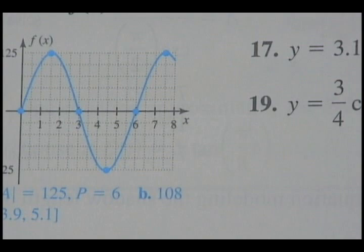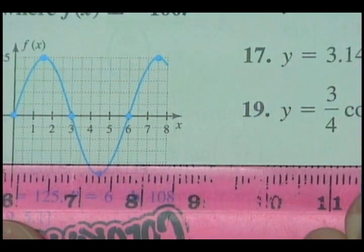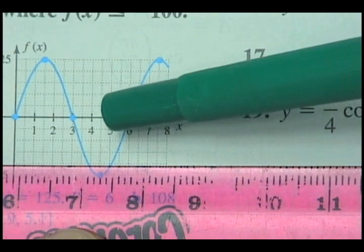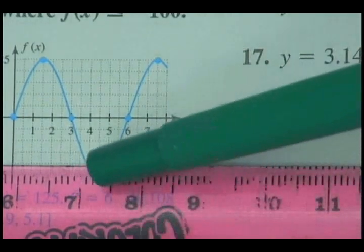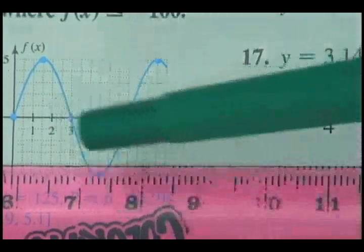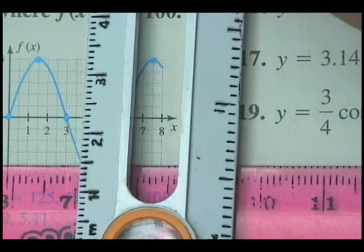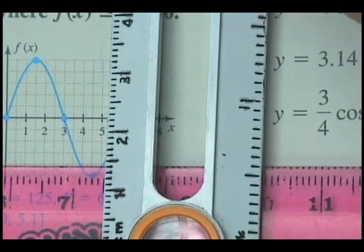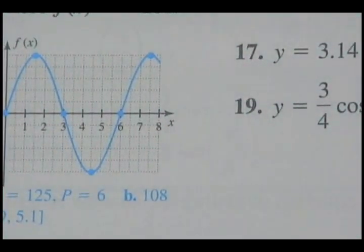For part C, they want to know where the function is below negative 100. Here's negative 100. Where would it be below that? It's going to be roughly about 3.9 to maybe 5.1 or 5.2. The book had 3.9 and 5.1 — we were pretty close.